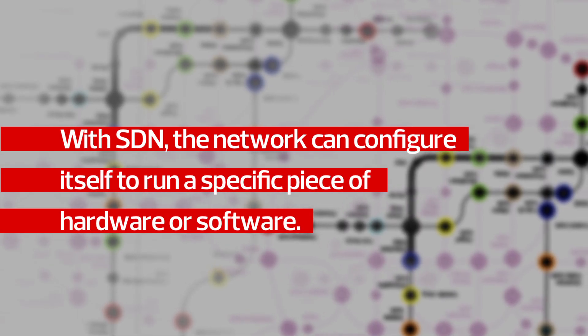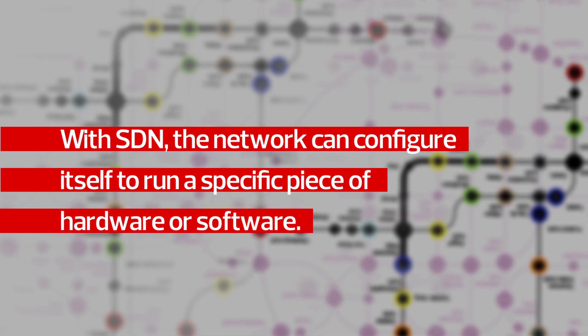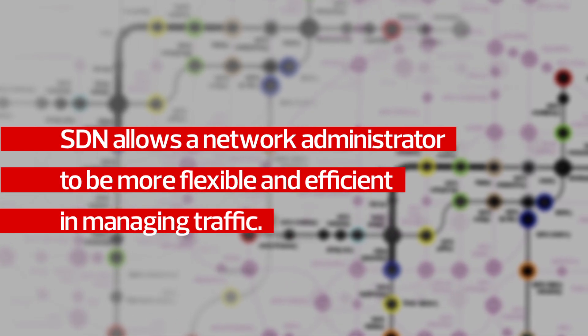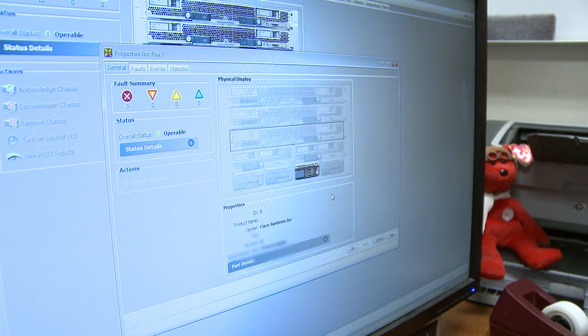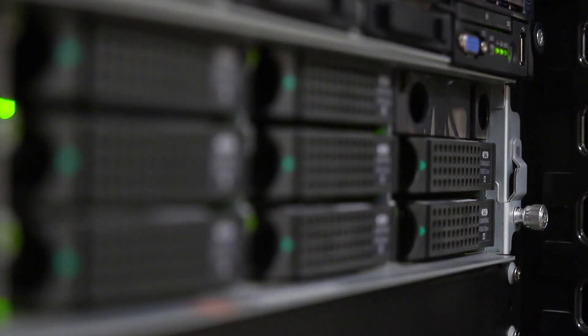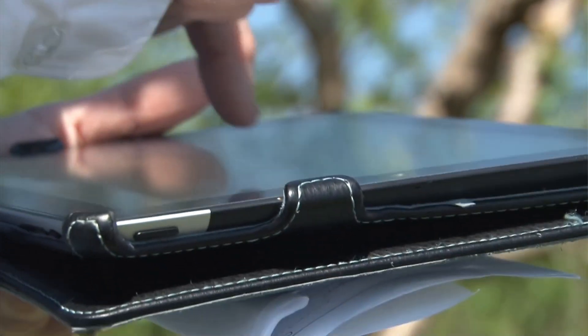I'll use QoS as an example. Today we pre-configure a network to support voice or video. With software defined networking, the device you plug in — say a phone — has its application. People are used to downloading an app, so that app talks to the immediate device and says 'this is what I need, this is how I need to operate on your network,' and the network does that configuration dynamically. You're not pre-programming and guessing how many calls or video conversations you might have; the network sees you coming and does the programming automatically.